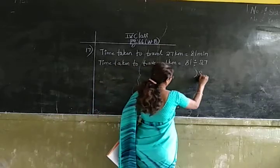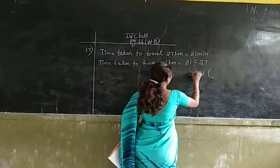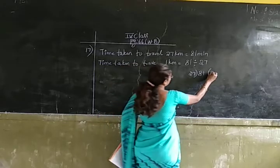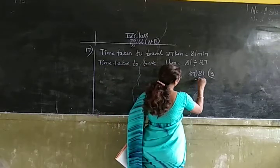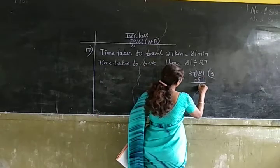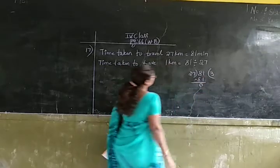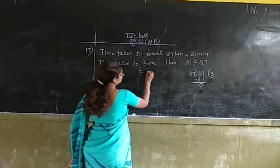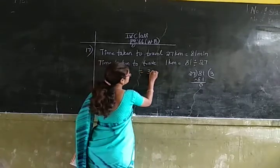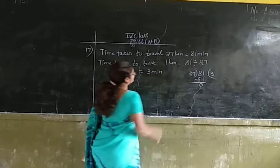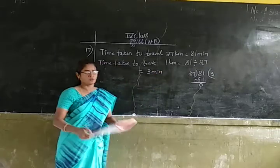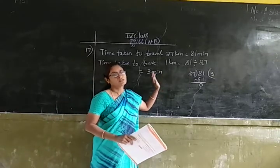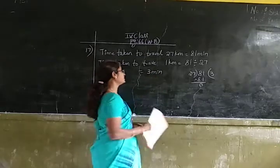Let us divide 81 by 27. 27 threes are 81. So it takes 3 minutes to travel 1 kilometer.